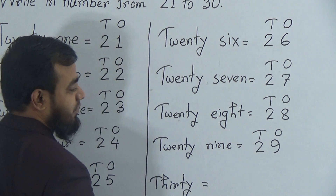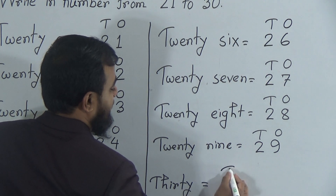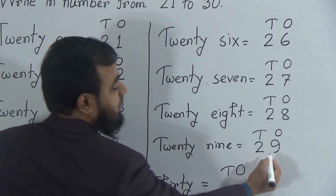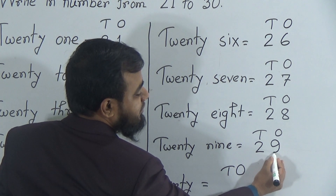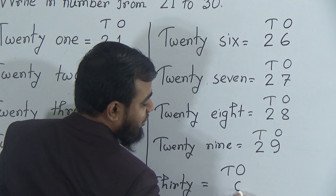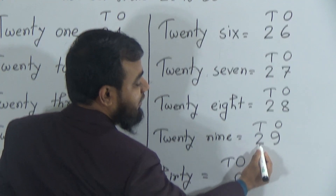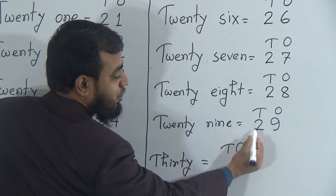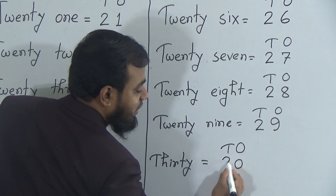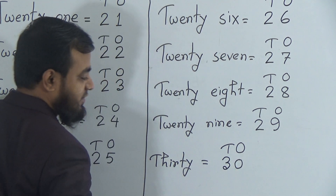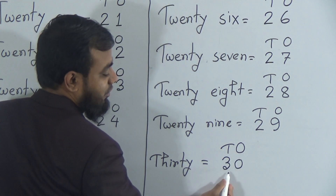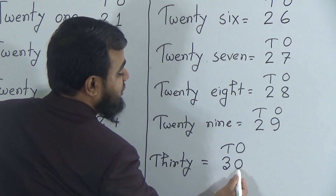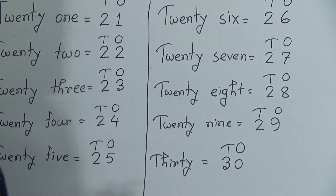Now the last number for today is 30. After nine, we write zero in the ones position. When we write zero in the ones position, the tens position increases by one — it was two, so it becomes three. Three tens and zero ones makes the number 30 — three and zero makes 30.